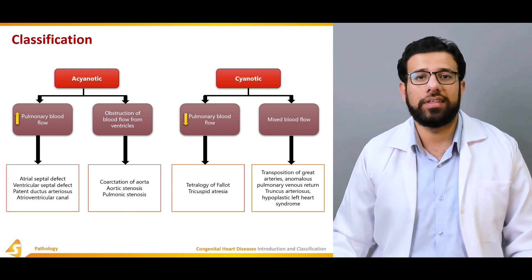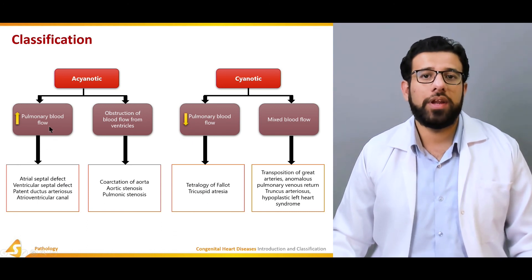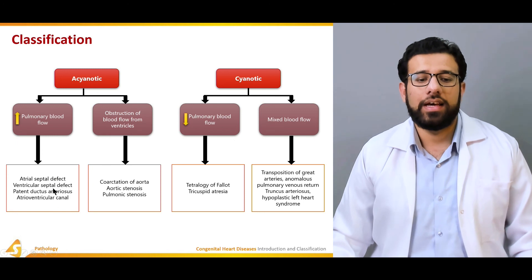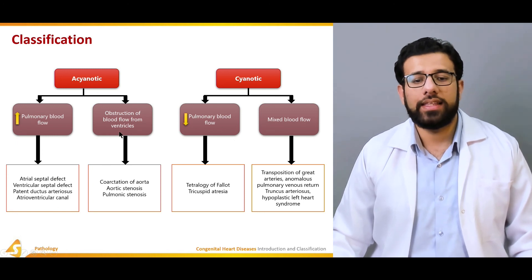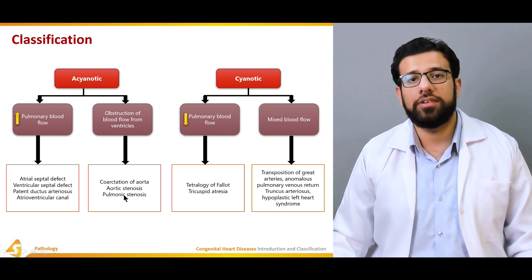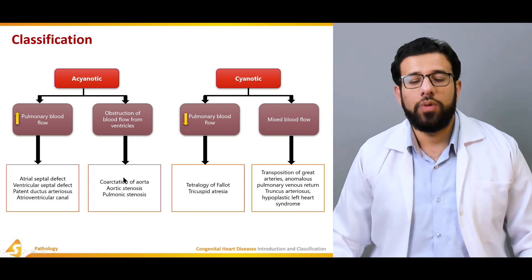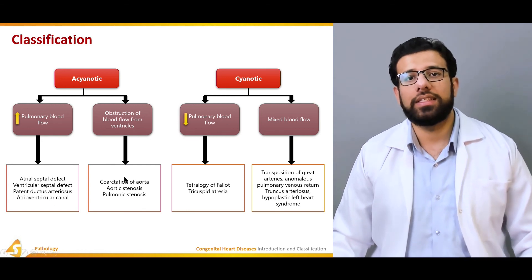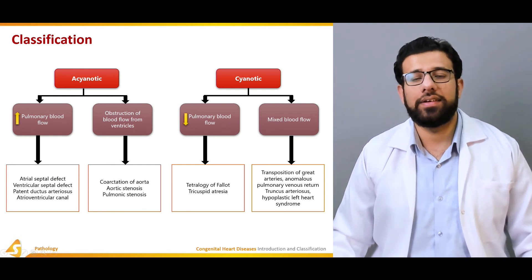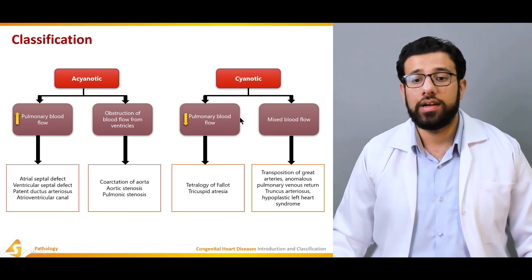The acyanotic group is divided into two subgroups: one with increased pulmonary blood flow — which includes four conditions — and one with obstruction of blood flow from the ventricles, which includes three conditions: coarctation of the aorta, pulmonary stenosis, and aortic stenosis. All these diseases will be discussed in further sections of today's lecture.